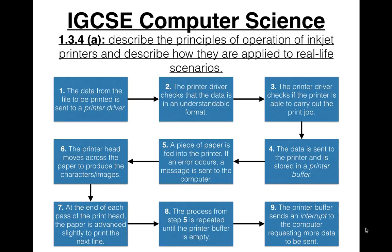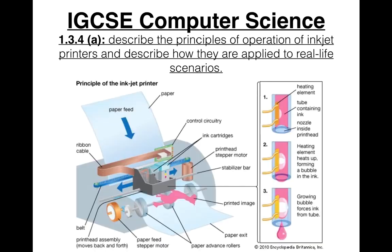This is what an inkjet printer looks like on the inside. As you can see from this image, it is most probably using thermal bubble technology because you can see the expanding bubble. You can identify the ink cartridges, the stepper motor, the printhead, the paper, and the belt.